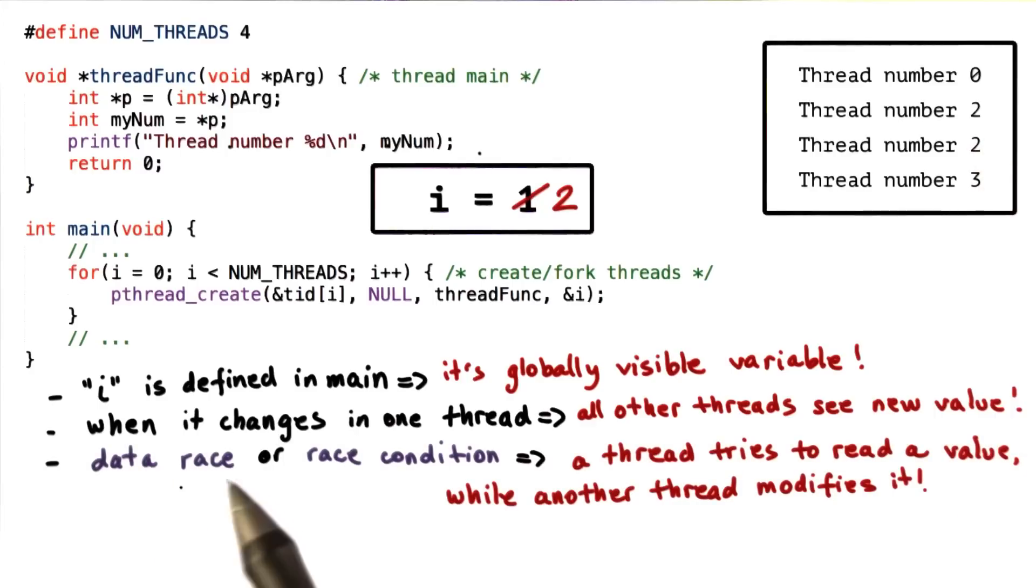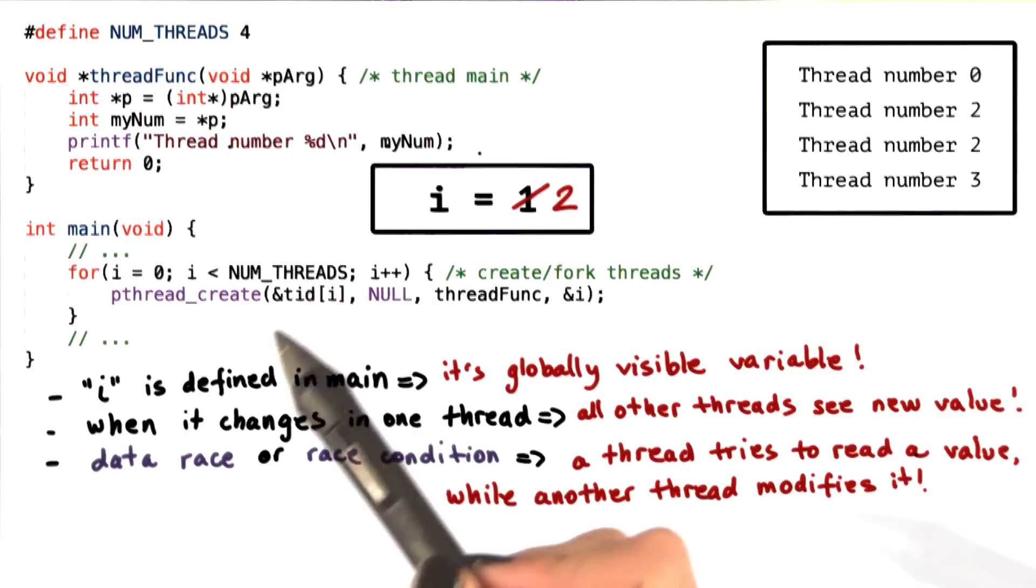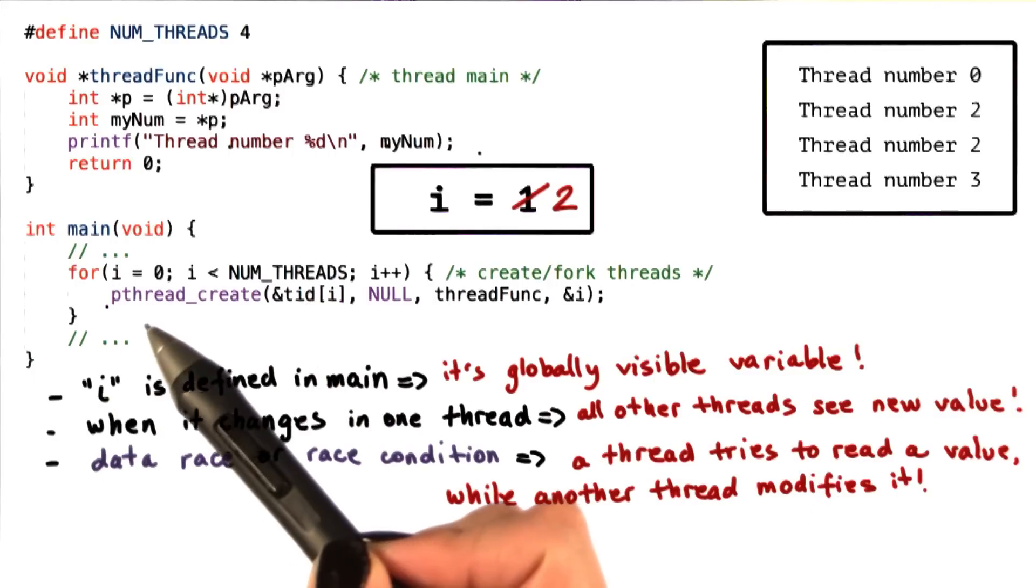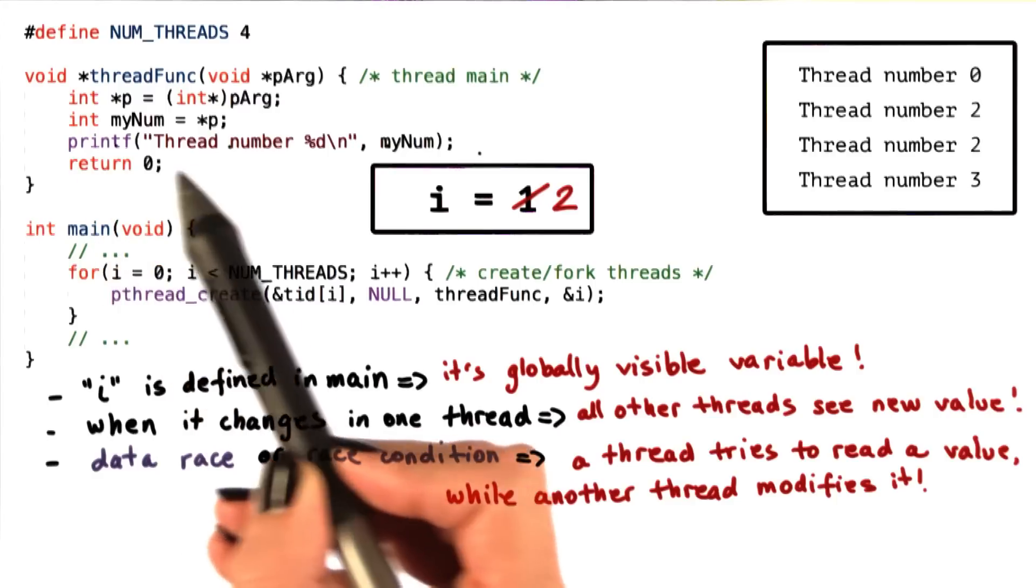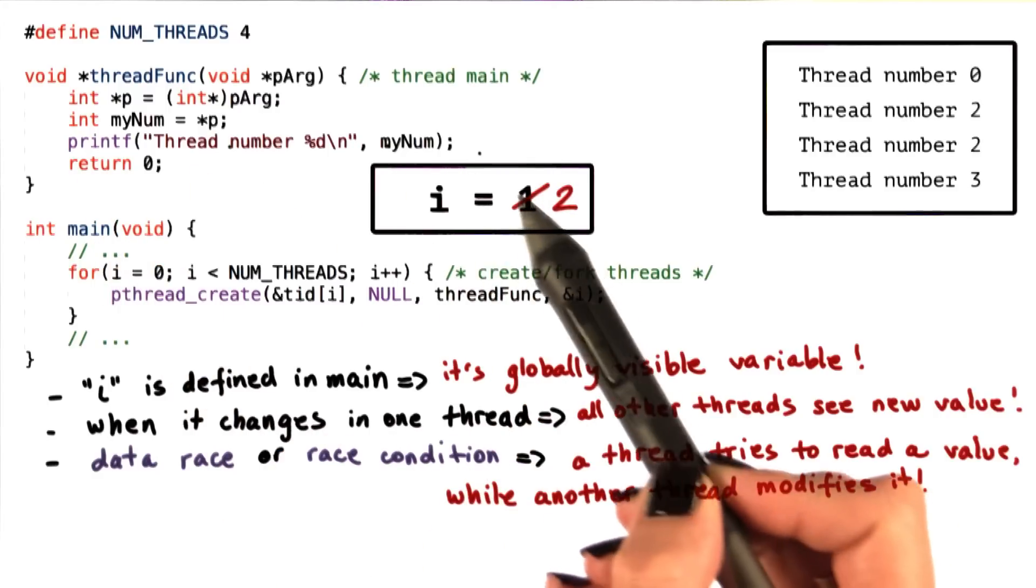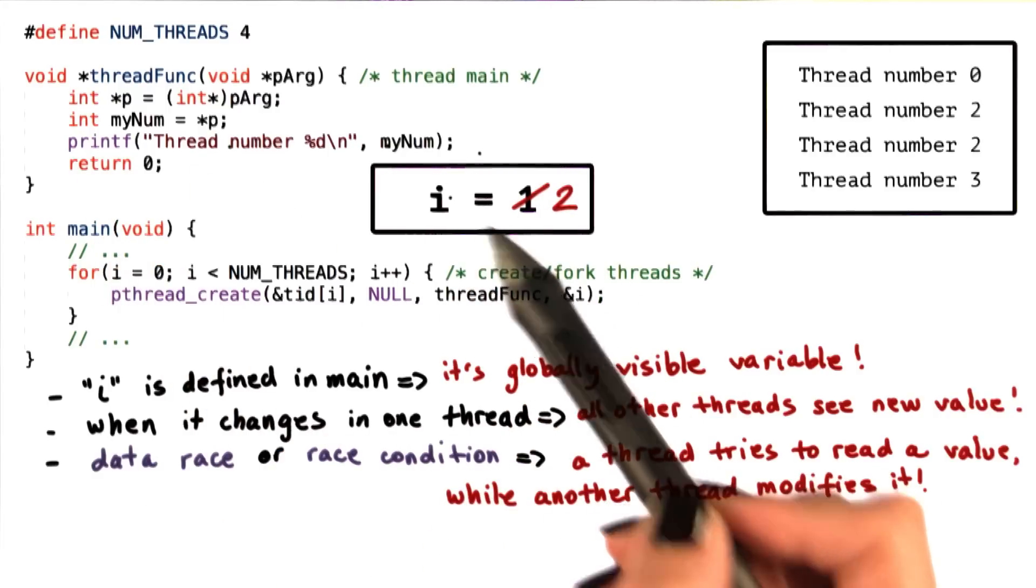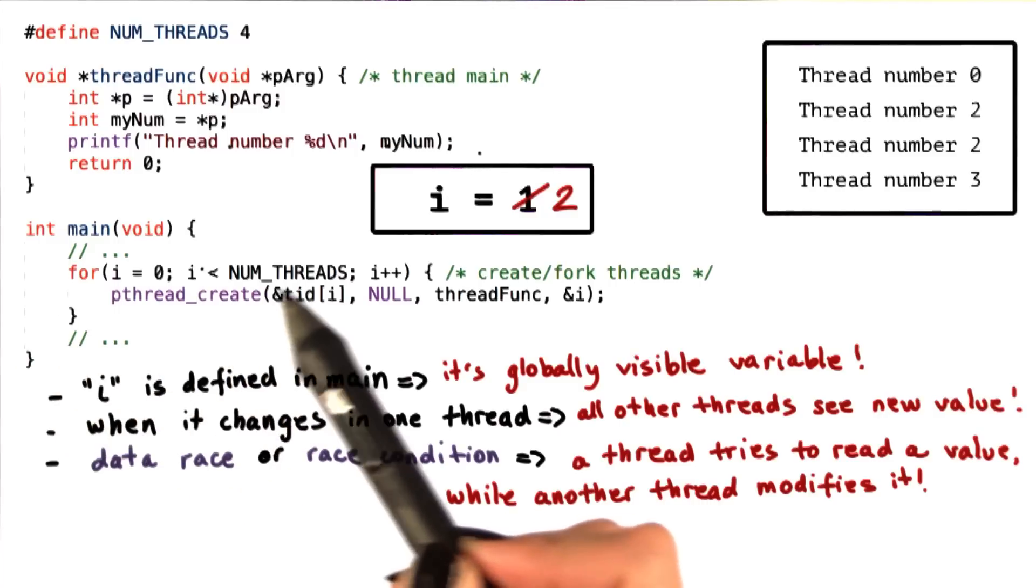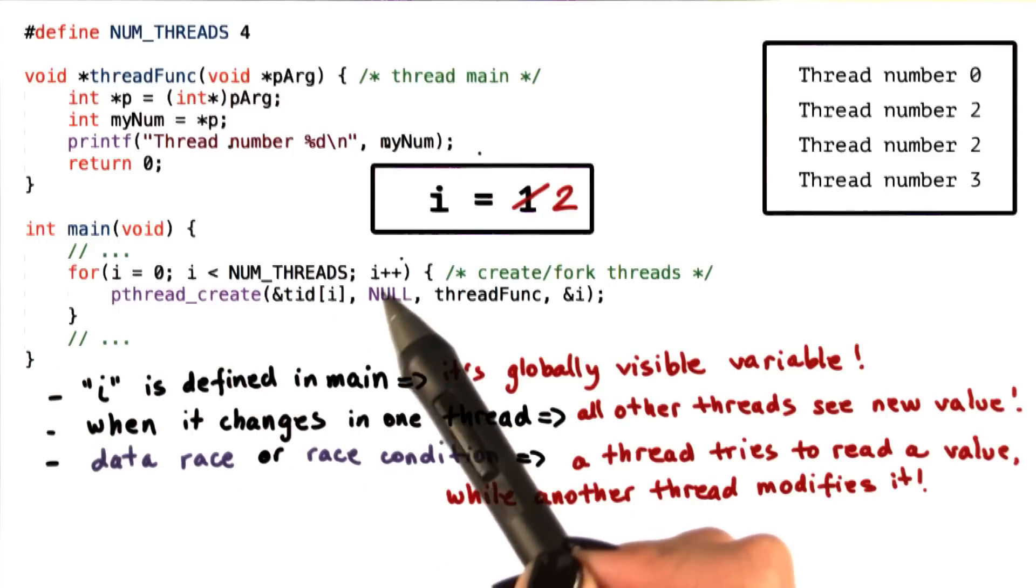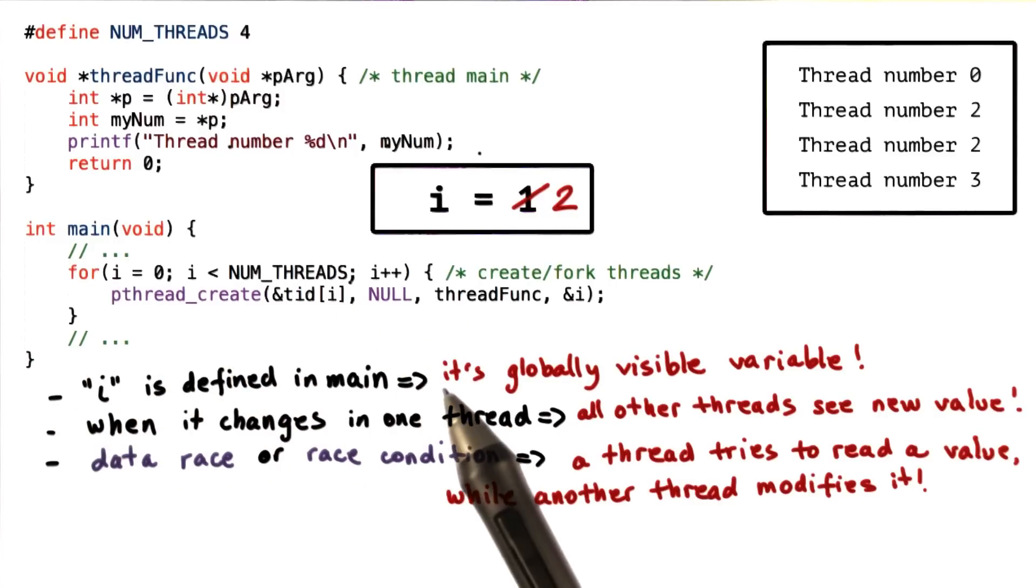We call this situation a data race or a race condition. It occurs when one thread tries to read a variable that another thread is modifying. In this example, the second thread was trying to read the variable i, and we were expecting it would read i equal 1. However, at the same time, the main thread was modifying i, was incrementing it, and it became 2.